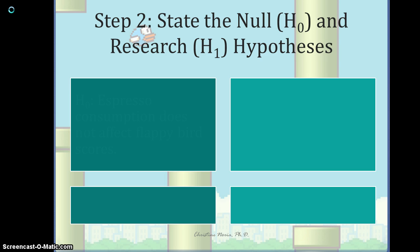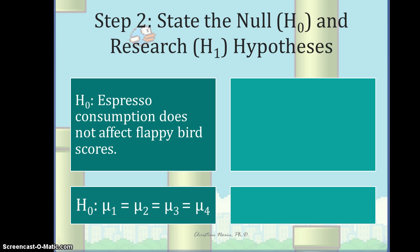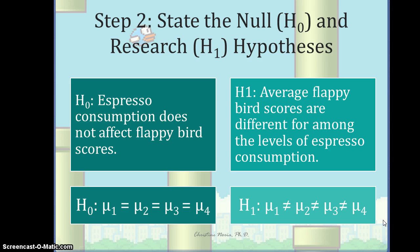So the second step is to state the null and research hypotheses. You'll notice that here, when you talk about the null hypothesis, really the only way you can state this is that all of the group means are equal. Espresso consumption does not affect Flappy Bird scores is our null hypothesis. So they're all the same, symbolically, as well. And for our alternative hypothesis, then we're saying that average Flappy Bird scores are different among the levels of espresso consumption. You can see that we express this as non-equivalence. The mean of no shots is not the same as the mean of one shot, is not the same as the mean of two shots, is not the same as the mean of three shots. Essentially what we're saying is there is a difference somewhere.